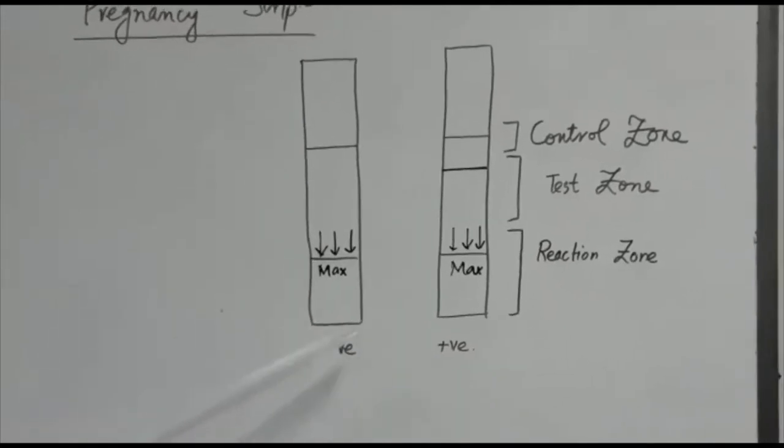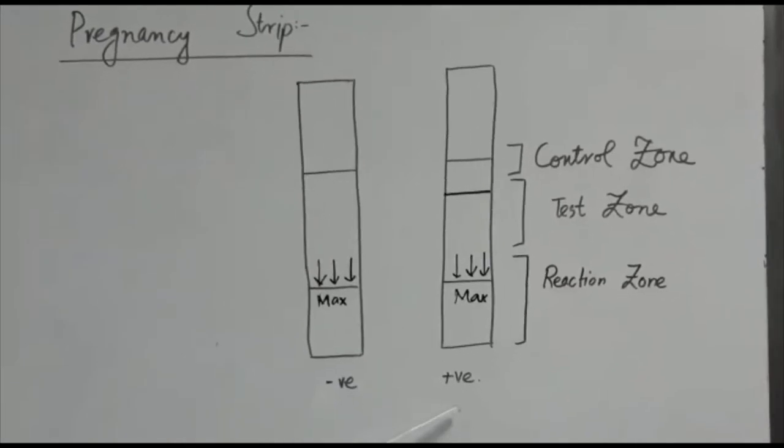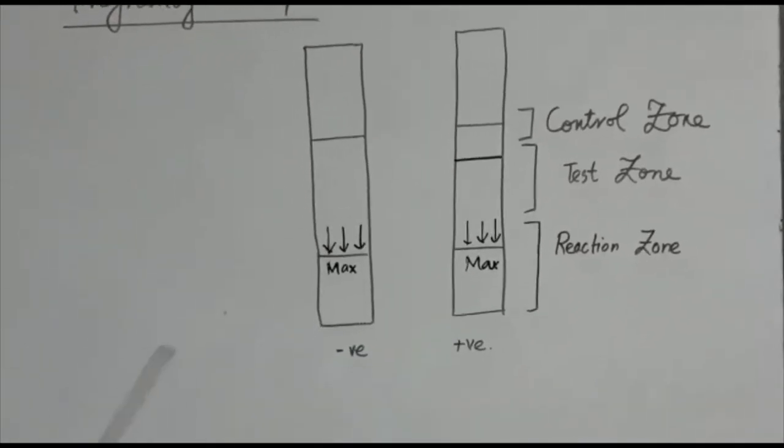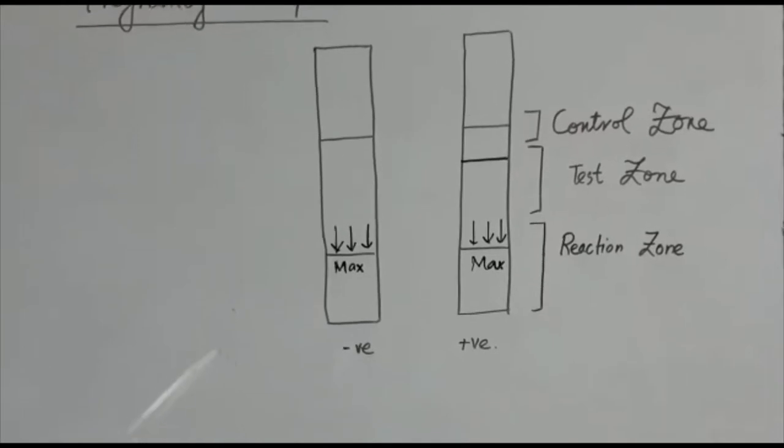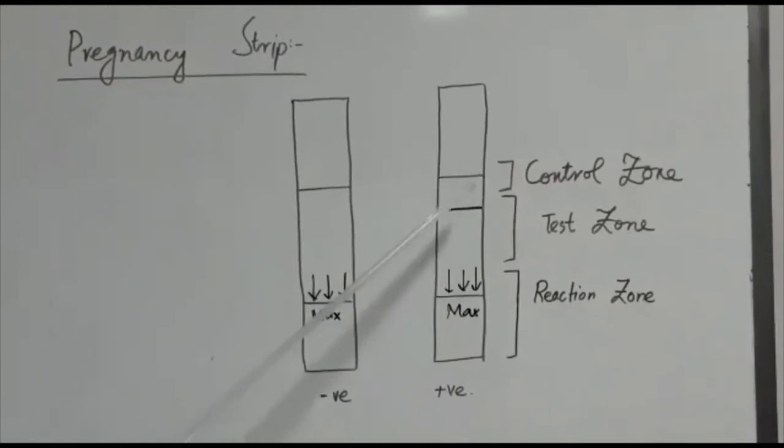These two figures show us what negative result looks like and what positive result looks like. For this purpose, let us study the zones which are present normally in our pregnancy strip.